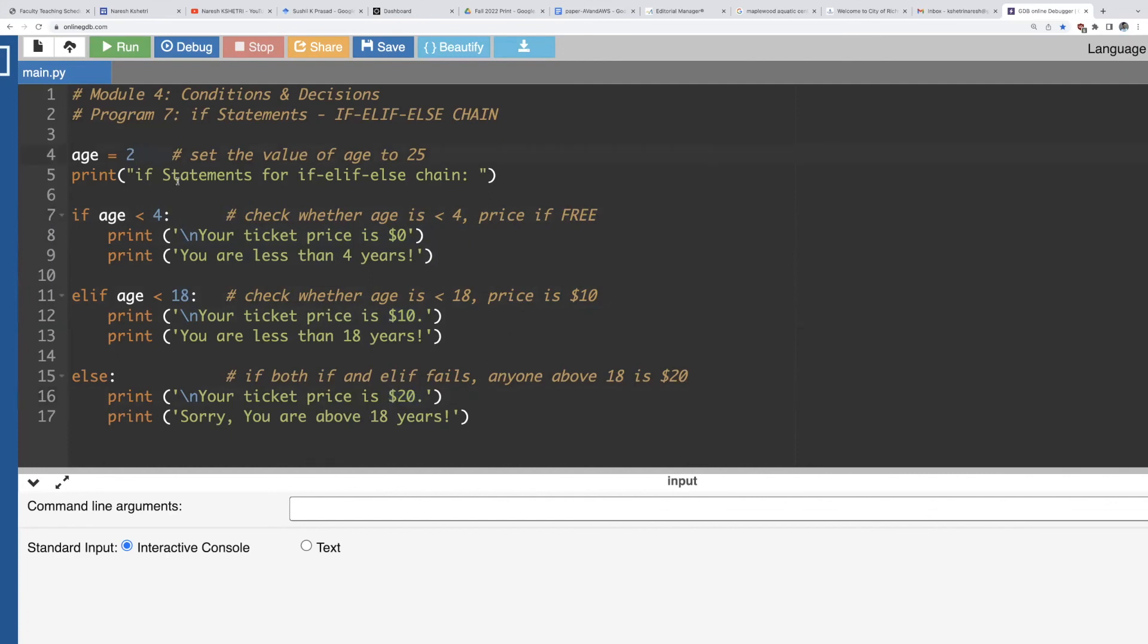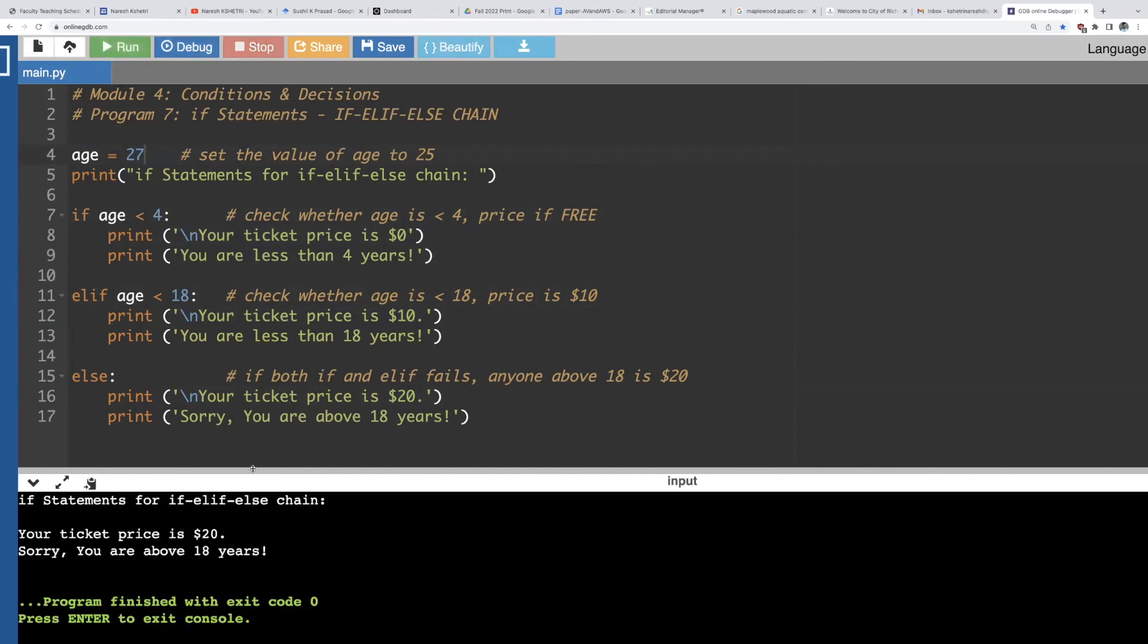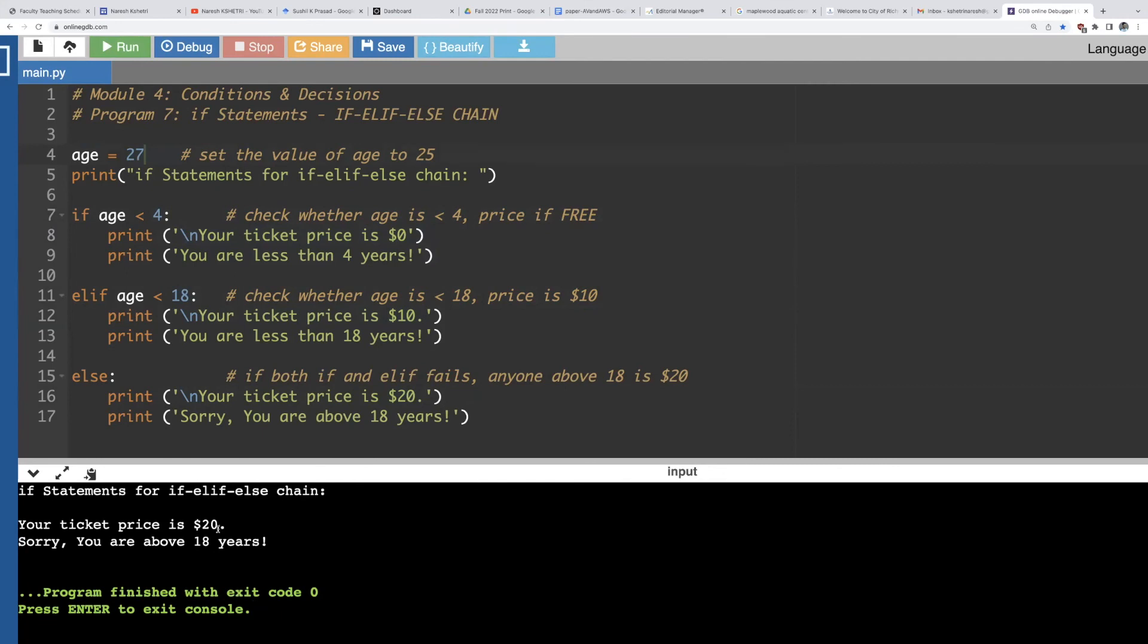So let us check, let me set the age to 27 years old and run that. It will say your ticket price is $20 because it will print the same message sorry you are above 18 years.